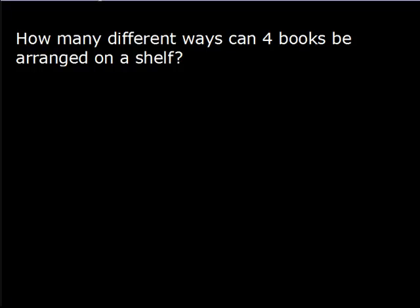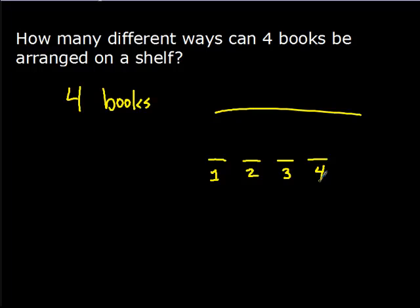In this problem, we're looking at the fact that we have four books, and we want to put them on a bookshelf. So basically because we have four books, there's actually only four spots for these books to go in order. The first book, the second book, the third book, and the fourth book.